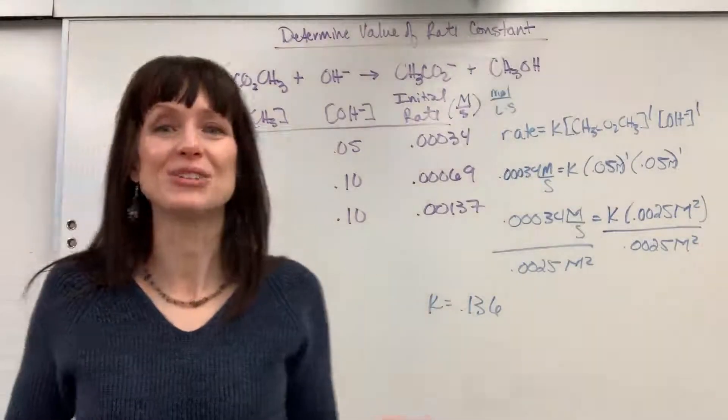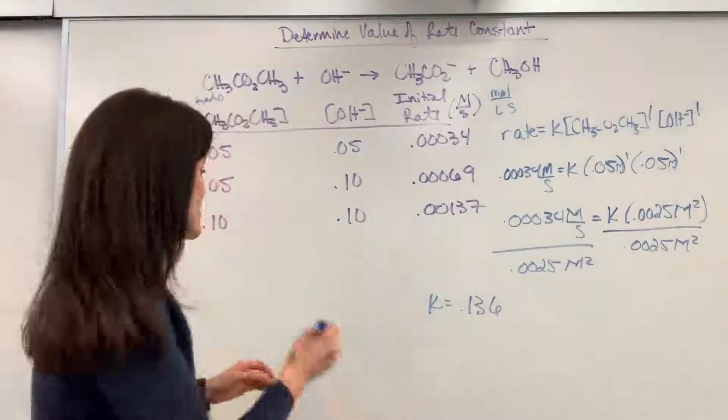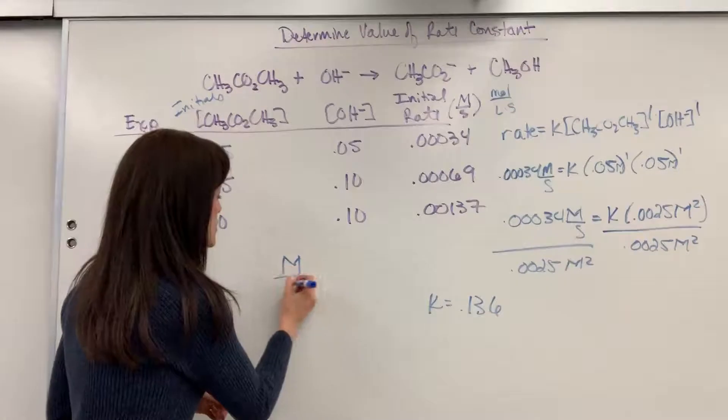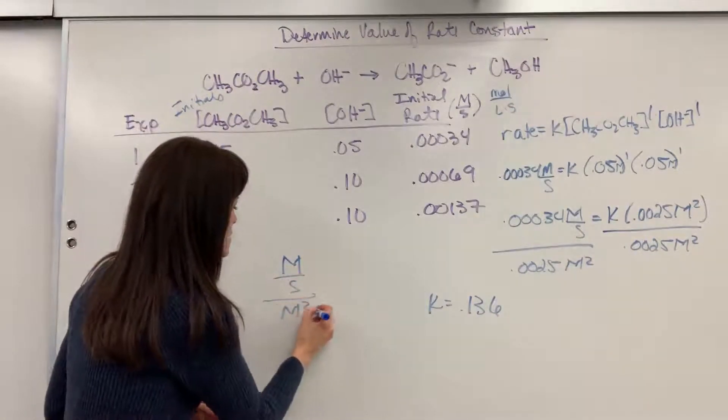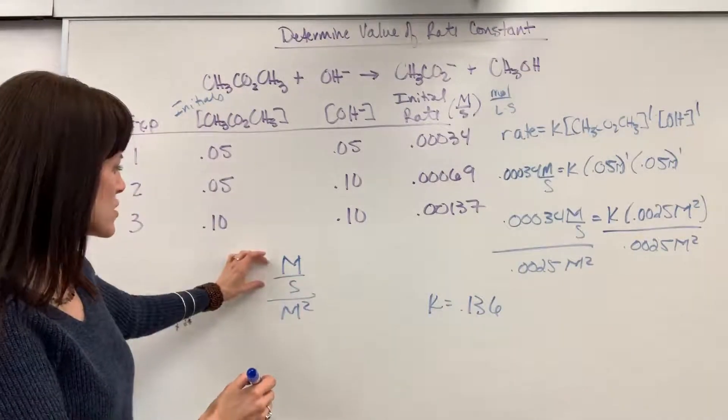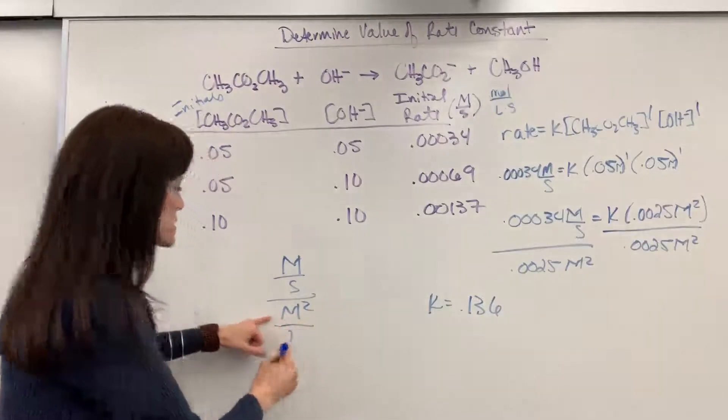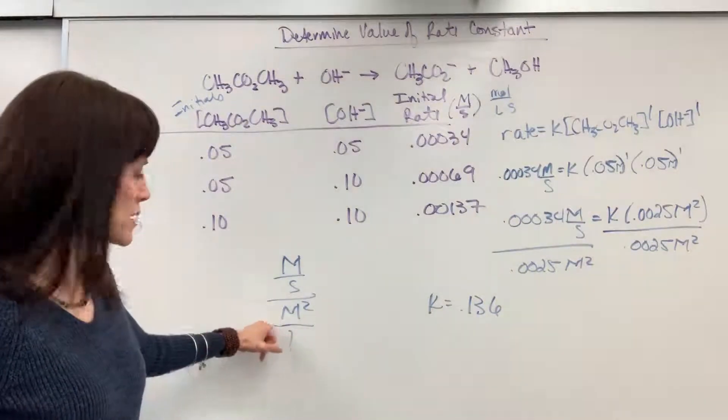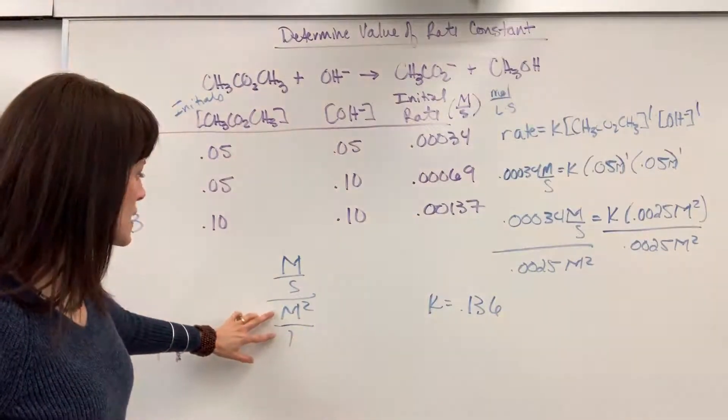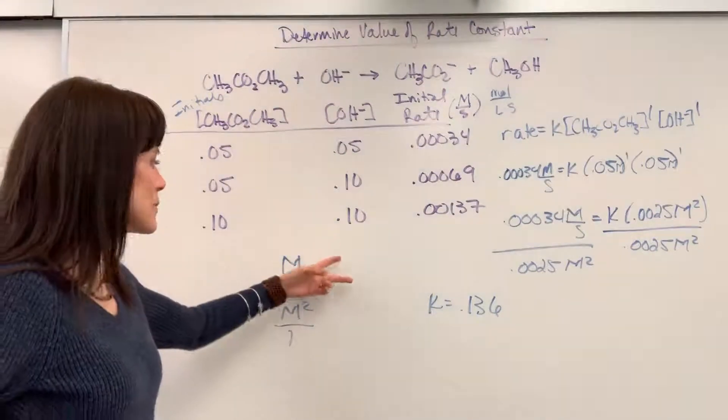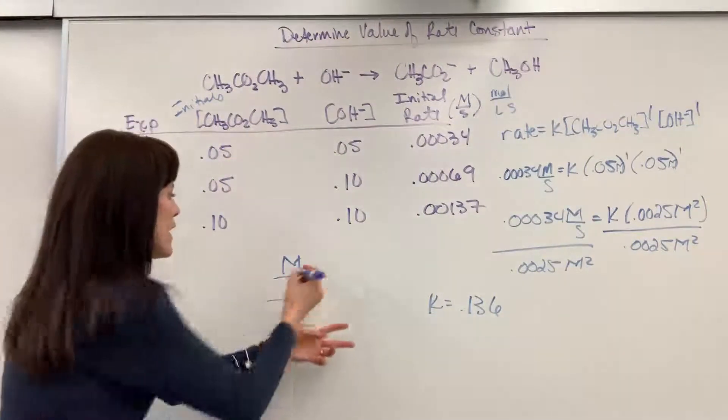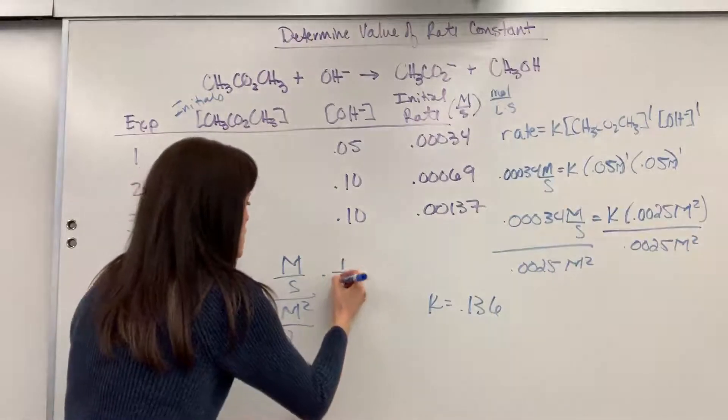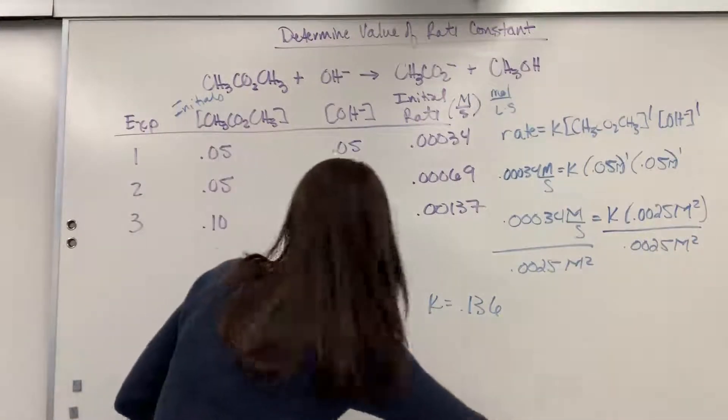Now we've got to do the units. Let's look just at units. If I've got molarity per second divided by molarity squared. So I've got a fraction divided by, remember this is a fraction, molarity squared over 1. And I take that bottom fraction, reciprocate it, and multiply. So when I flip that and multiply times 1 over molarity squared.